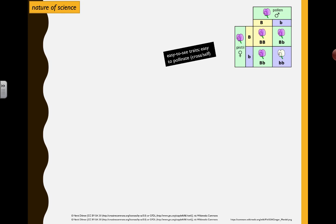By this point you have already learned about Punnett squares, you know how to solve genetics problems with traits and alleles — big B, little b, dominant, recessive. Maybe you can go so far as to do dihybrid crosses as well too. You talked about sex-linked traits, probably multiple alleles and blood types as well too.